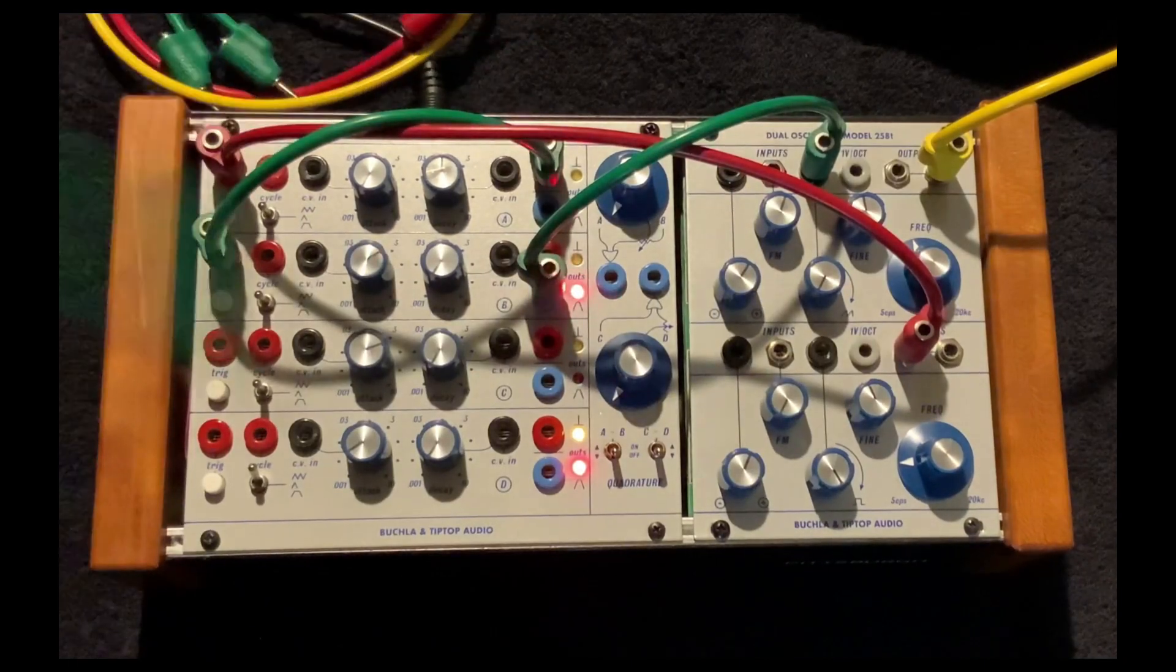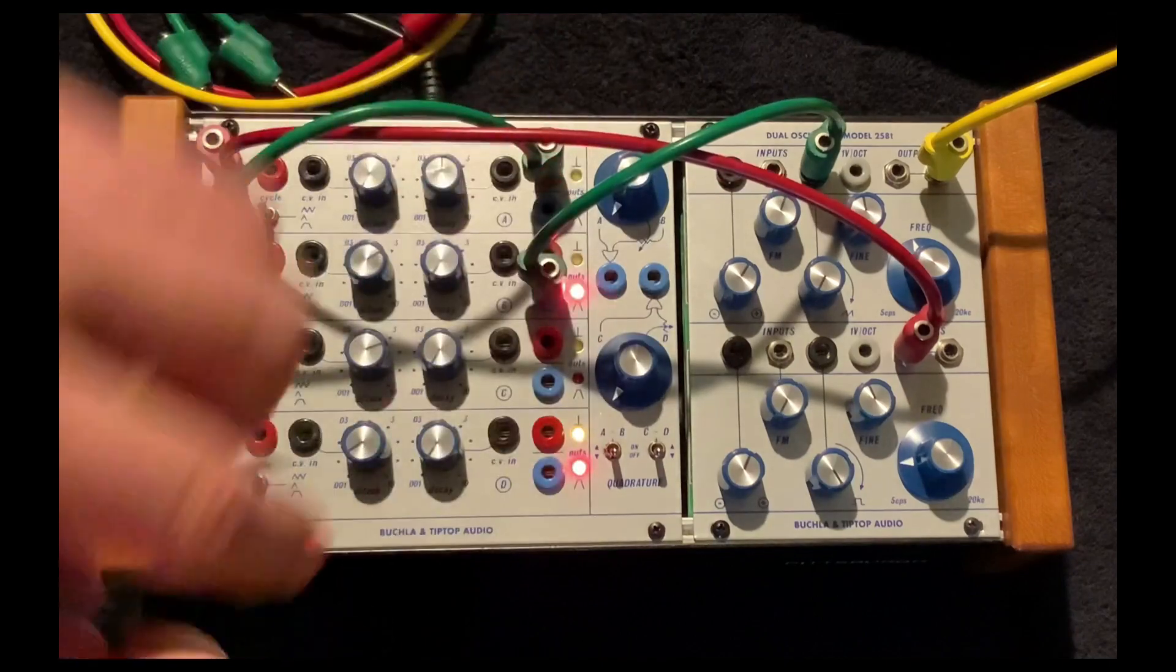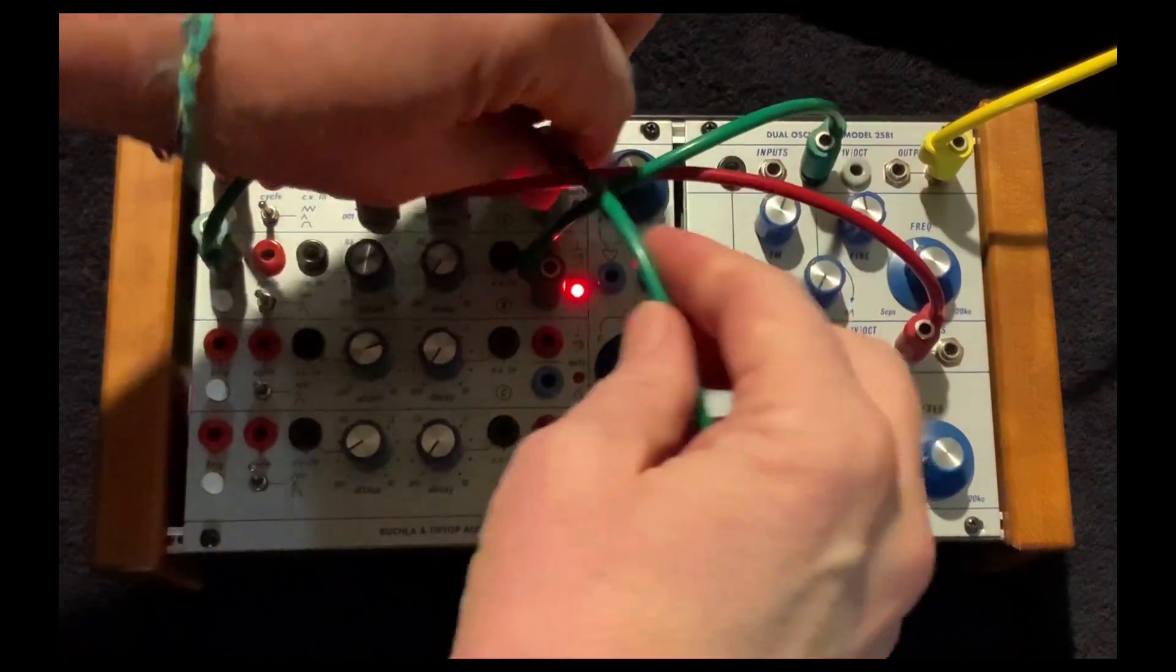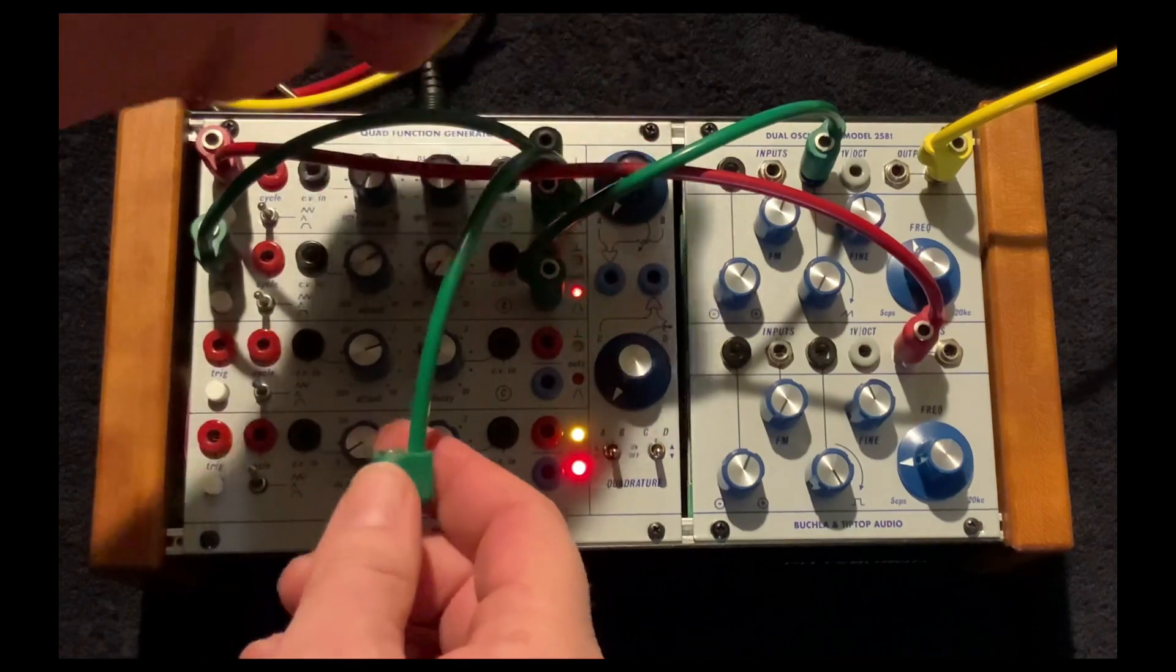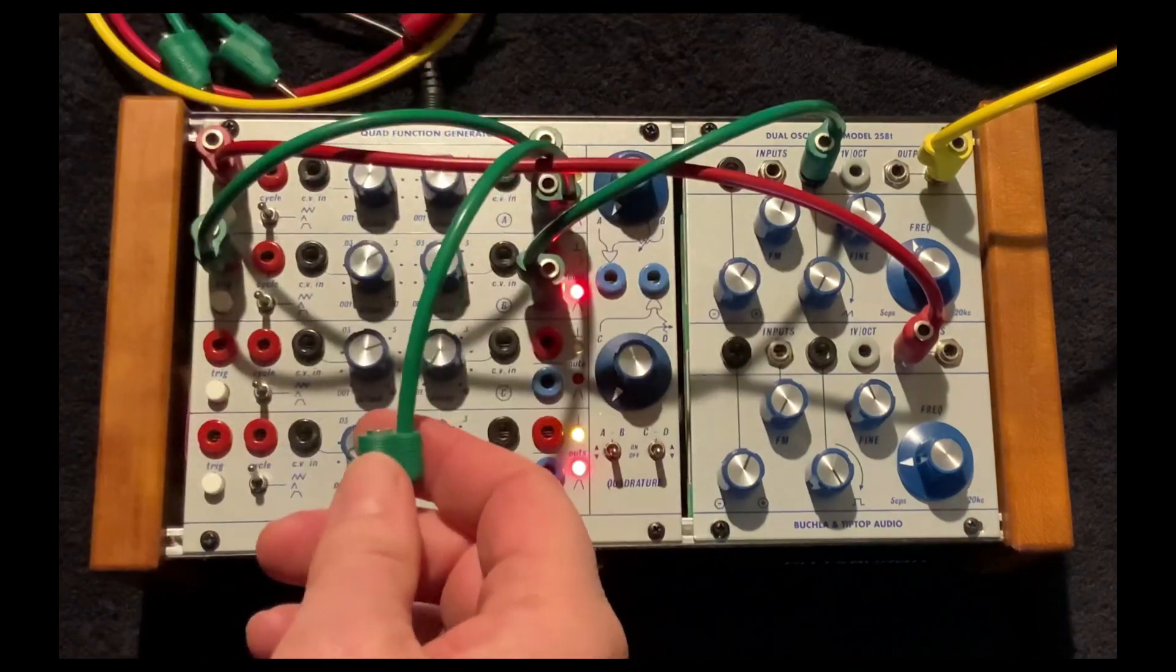And I can also, since I have an envelope coming out of this first function generator, that could go to, let's say, this is where it's handy to have this attenuverted pitch input.